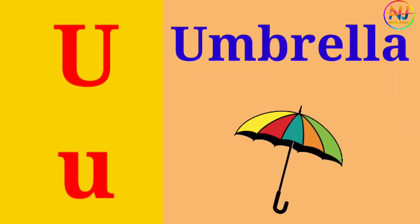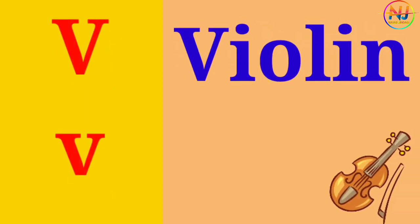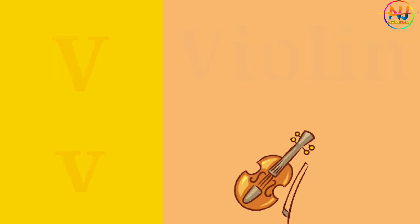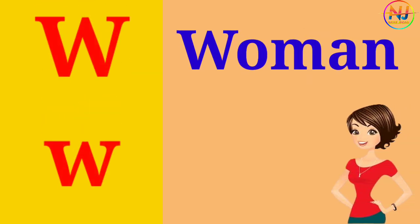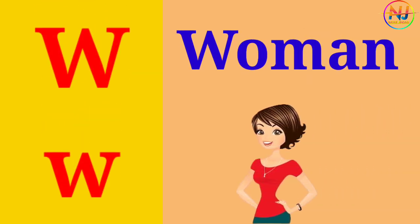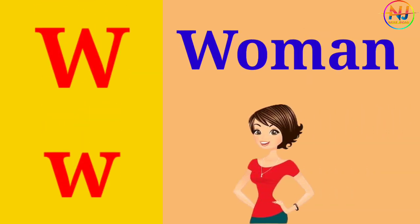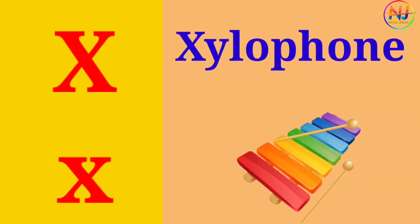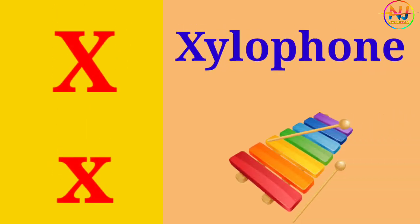U for umbrella. V for violin. W for woman. X for xylophone.